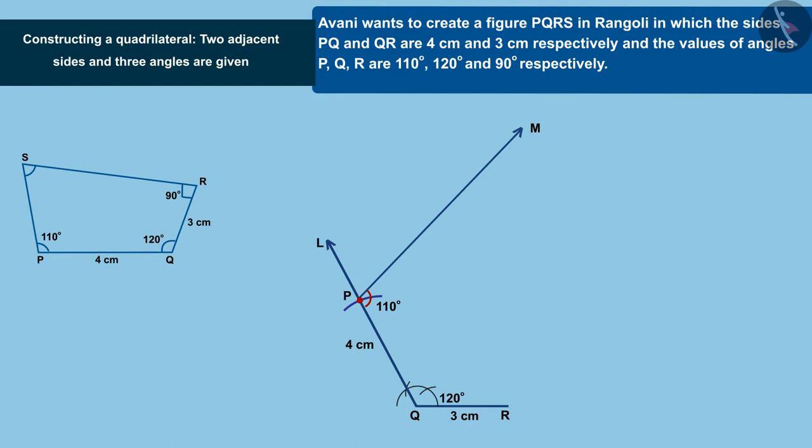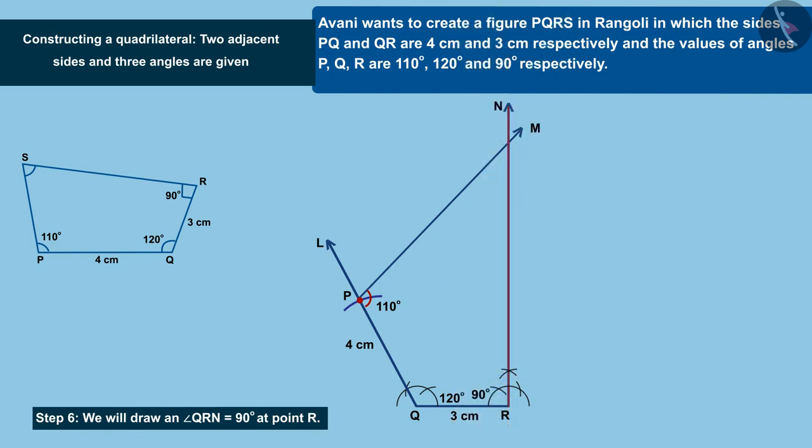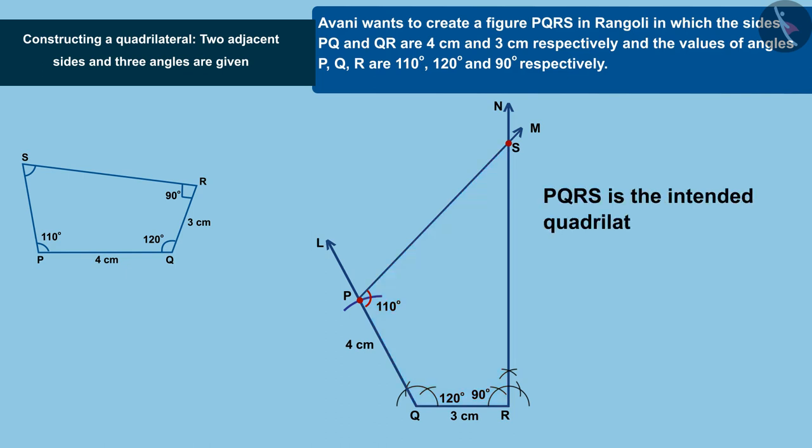Name an angle QRN equal to 90 degrees at point R. Name the intersection of RN and PN as S. In this way, we have constructed quadrilateral PQRS.